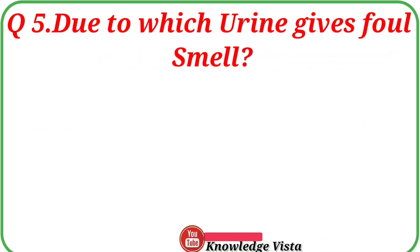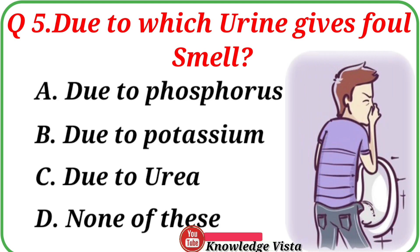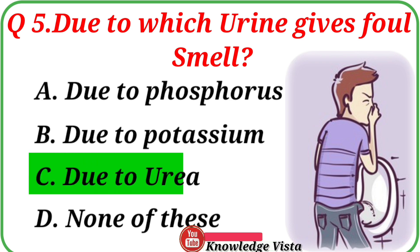Question No. 5: Due to which substance does urine give a foul smell? Your options are: A. Due to phosphorus, B. Due to potassium, C. Due to urea, D. None of these. Correct answer is Option C, due to urea.